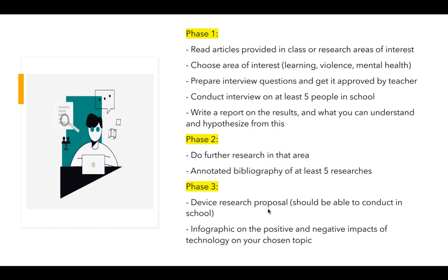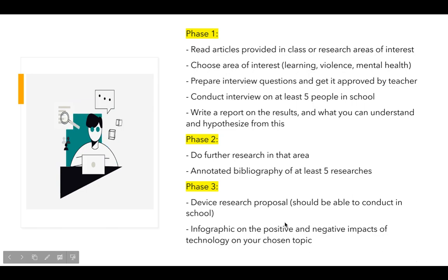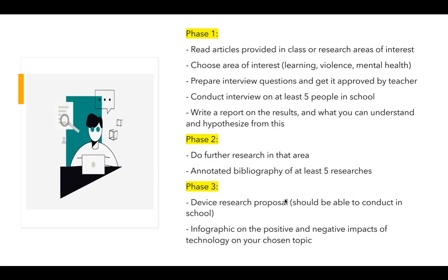So phase three: the first part is devising a research proposal that can be conducted in school with the available materials and school population. The final part of phase three will be to create an infographic on the positive and negative impacts of technology on your chosen topic — for example, if your topic is mental health, the infographic will cover positive and negative impacts of technology on mental health. I will provide rubrics and examples for each phase as we go, and we will divide the work over the next month so it shouldn't be too much of a problem.